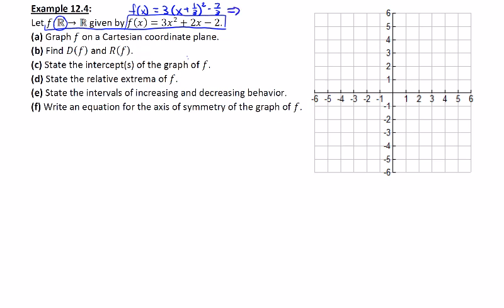So what we can get from that is three things. Number one, the vertex is equal to negative 1/3, negative 7/3. Number two is that this is going to be a parabola that opens up. And number three, there is going to be a vertical stretch by three.